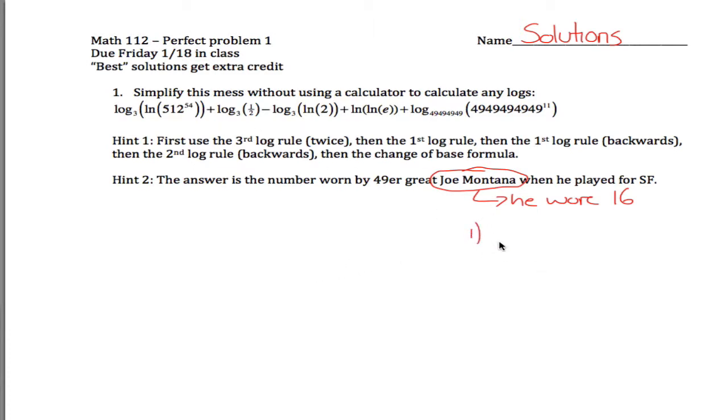Our first log rule says that if you're taking the log, any base, of a product, that's equal to the sum of those logs. Our next log rule says that if you're taking the log of a quotient, that's equal to the difference of those logs. And our third log rule says that if you're taking the log of an exponent, you can bring the exponent down in front and multiply that by the log of the base. Here's our 3 log rules.